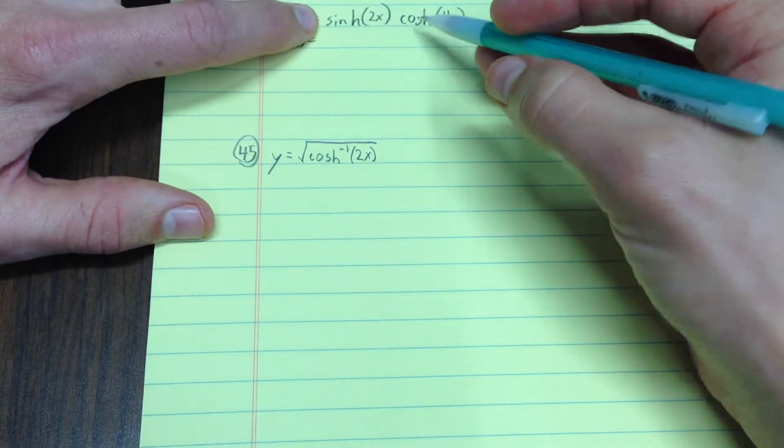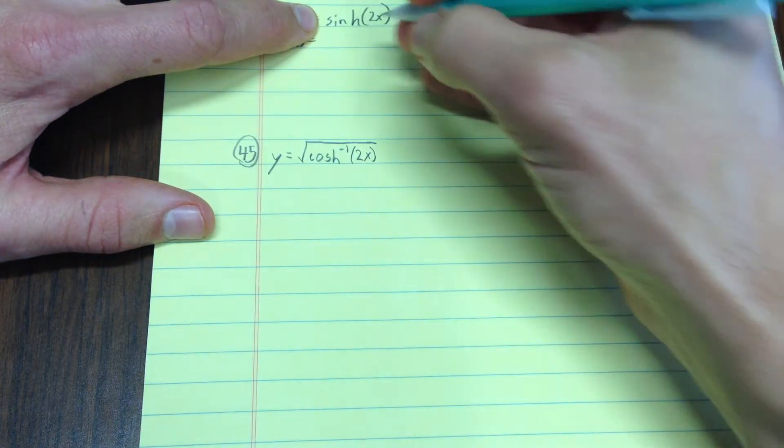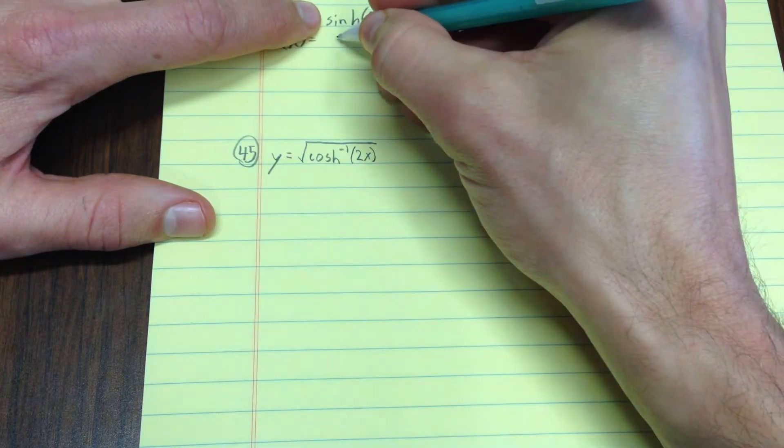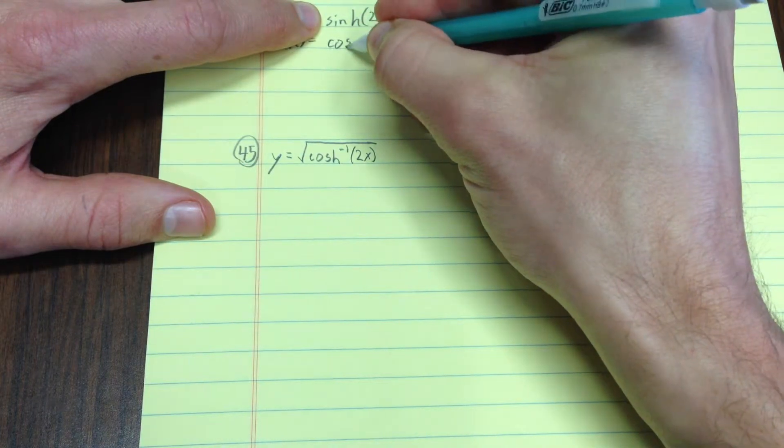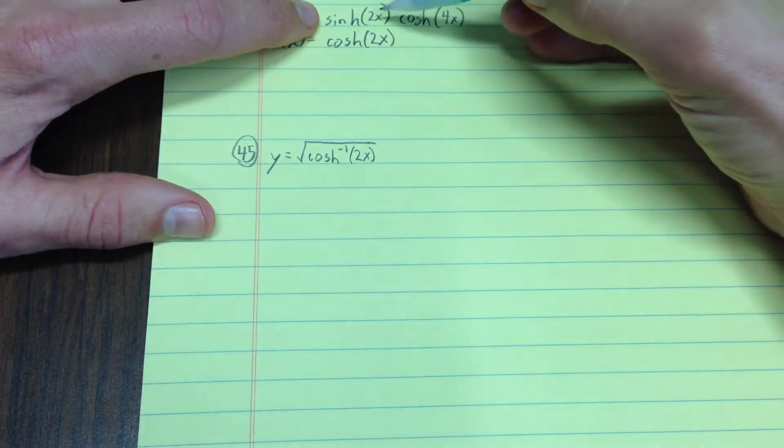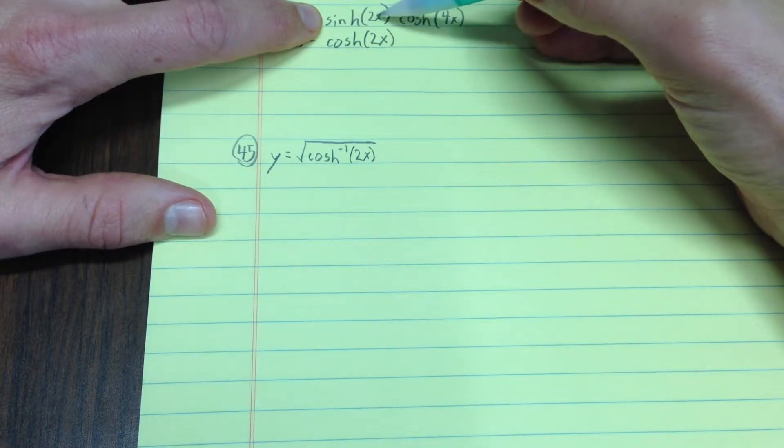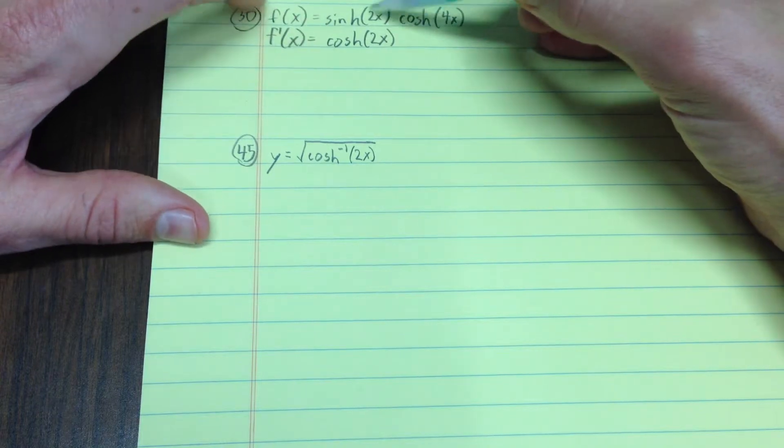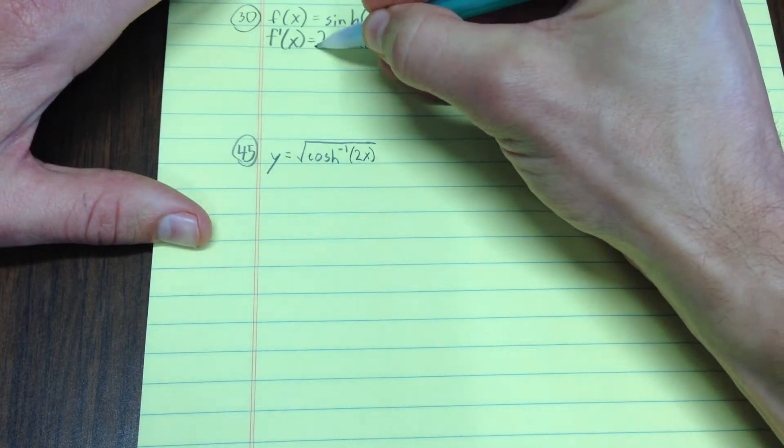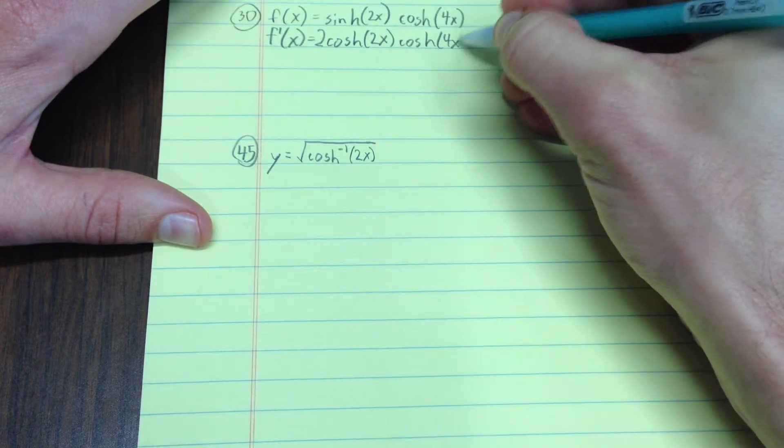Interesting thing about sinh and cosh is the derivative of sinh is cosh. The derivative of cosh is sinh. So, take the derivative of this, cosh 2x. Now, we're going to actually use the chain rule in this piece. The derivative of sinh u is cosh u, but then I have to multiply by the derivative of the inside, 2, cosh 4x.